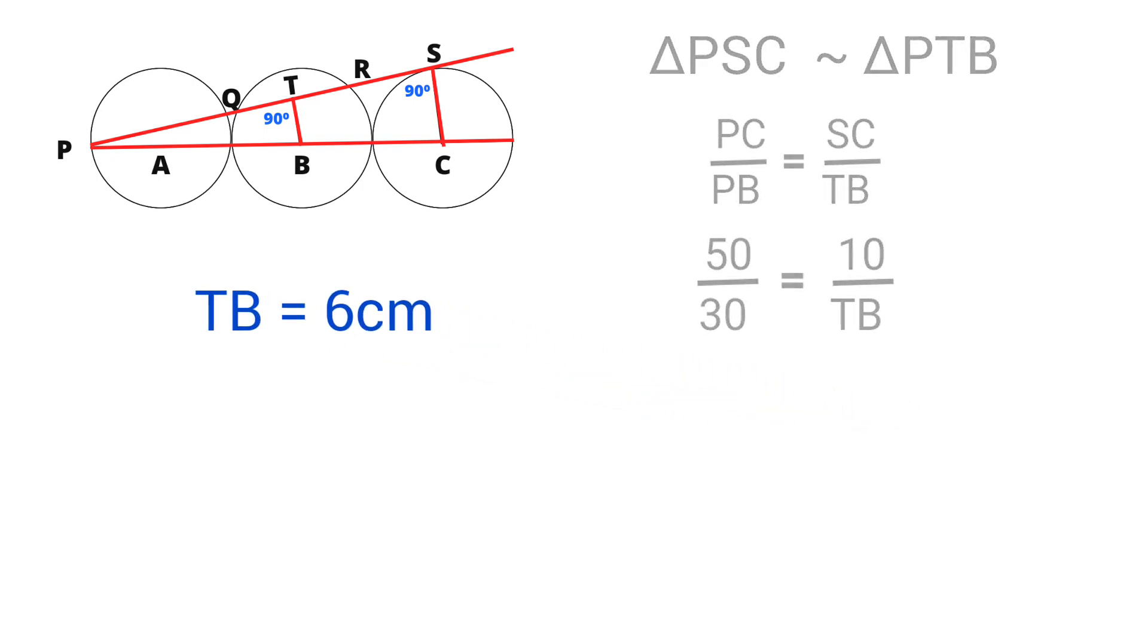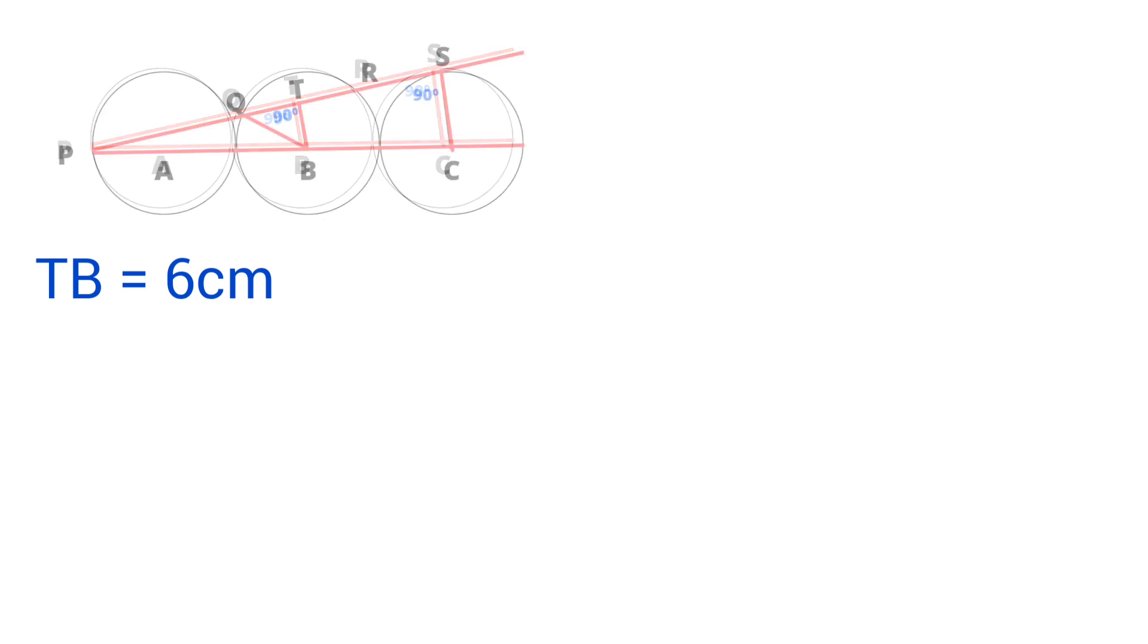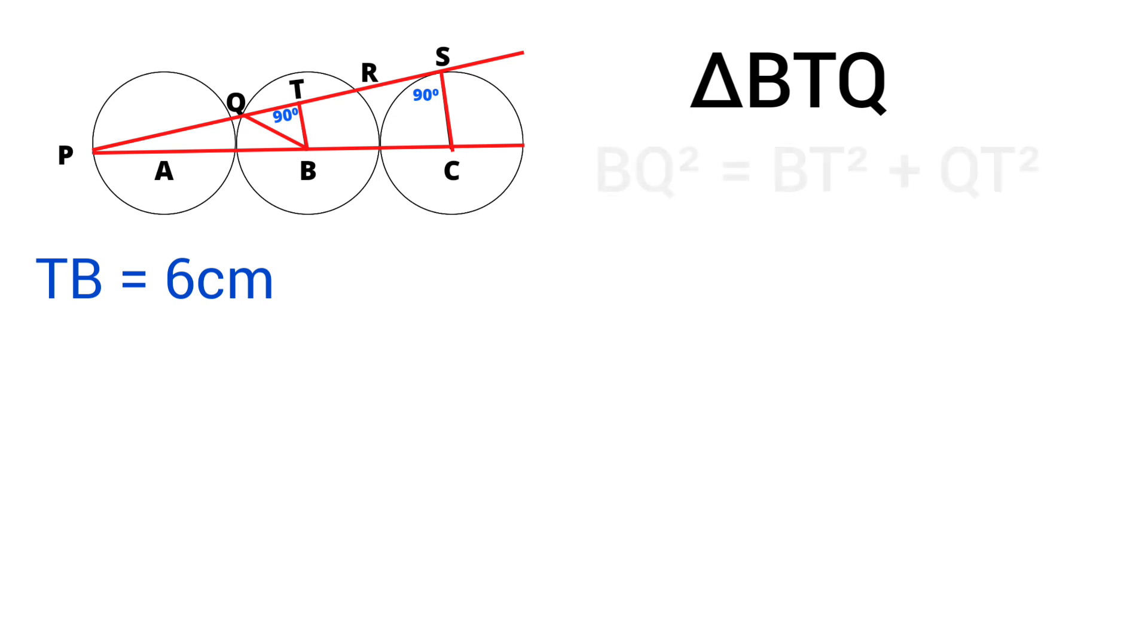Now, in that second circle, let's join B and Q. Now in right angle triangle BTQ with the help of Pythagoras theorem, we can write BQ square equals BT square plus QT square.